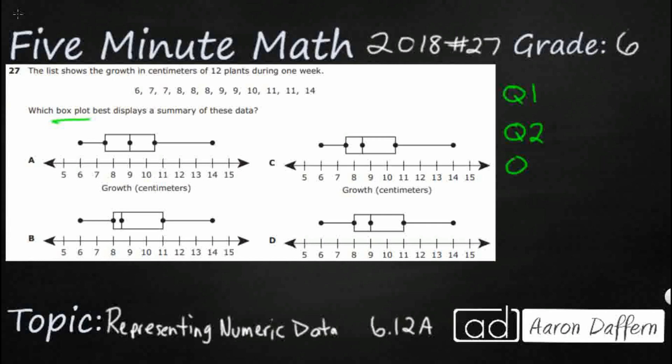What we want to do is split up our data. First we're going to split it in half. Step one is to put your data in order — they've already provided that for you. If you ever get data that's not in numeric order, you are going to have to rewrite it from smallest to largest. But this data is already in order.